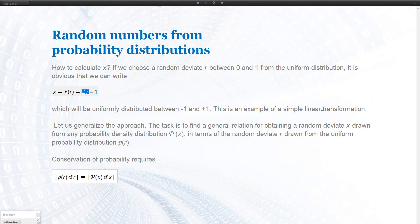Now we are looking, and if we generalize this, so that means we need to find a general relation to get x from our standard normally distributed, from our uniformly distributed r. And starting with this relationship, namely that between a certain interval,